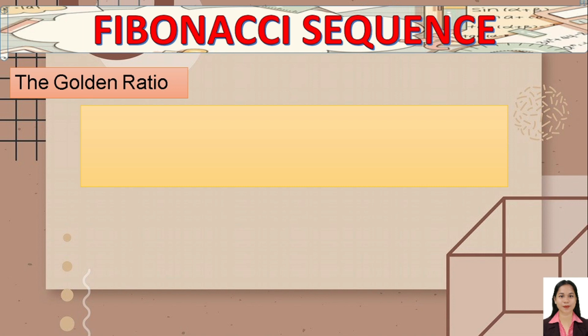Now let's proceed to the golden ratio. By the way, the Fibonacci sequence occurs many times in nature — for example, in the sunflower. Observing sunflower species, some have 21 spirals in the clockwise direction and 34 spirals in the counterclockwise direction.